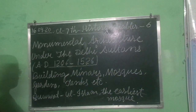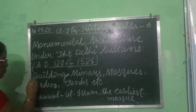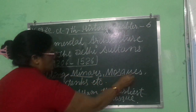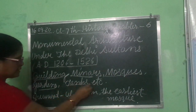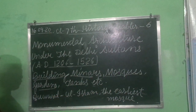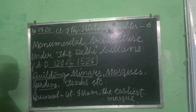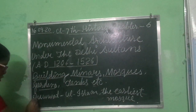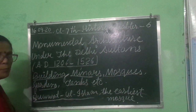In this chapter we will read about buildings, minars, mosques, gardens, tanks, etc. One of the most important mosques during this time is the Quwwat-ul-Islam.